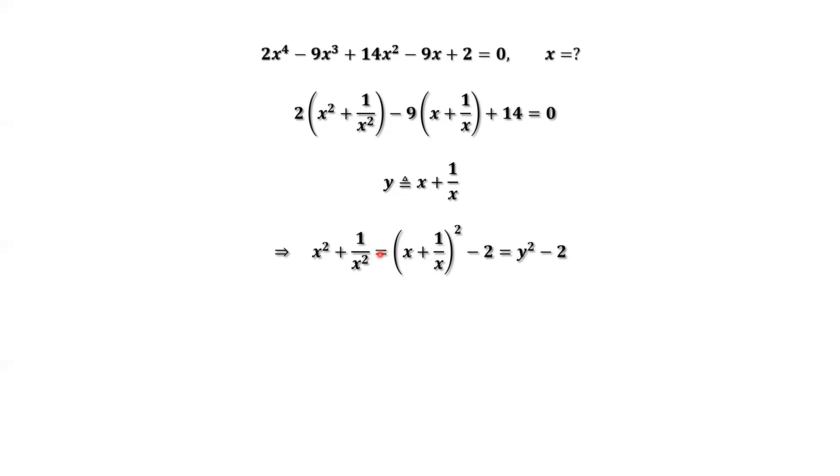x squared plus 1 over x squared: by definition, this is y. Therefore, x squared plus 1 over x squared equals y squared minus 2.